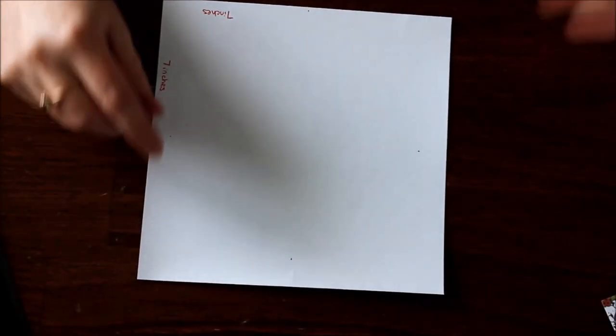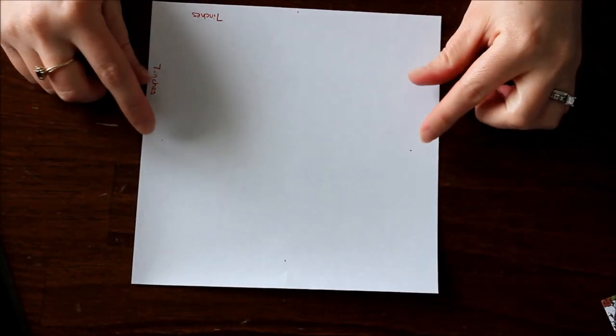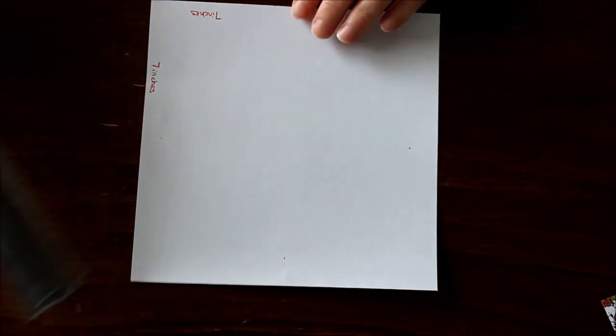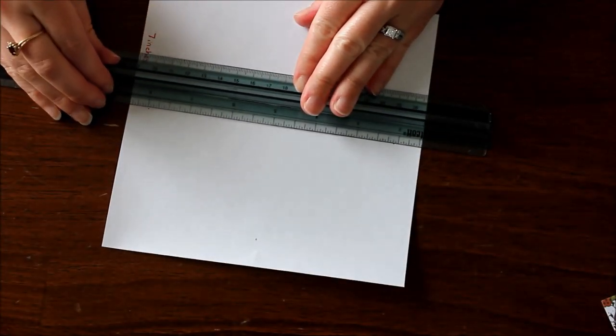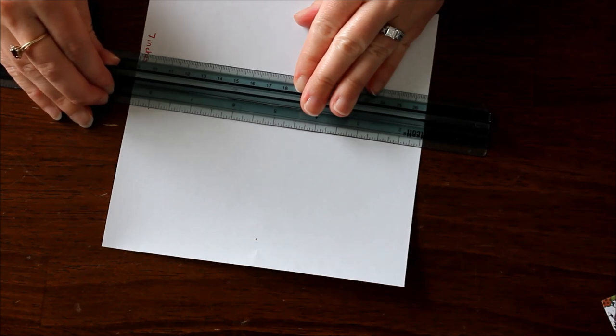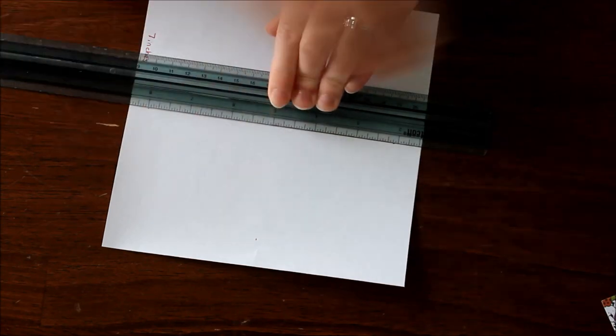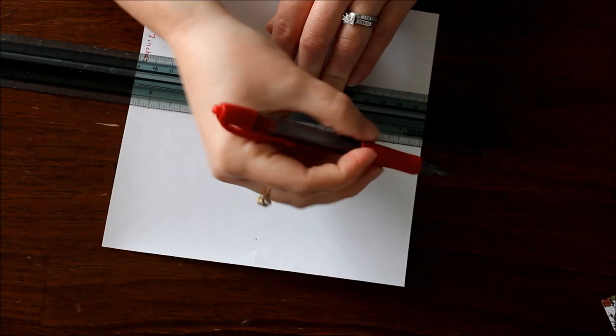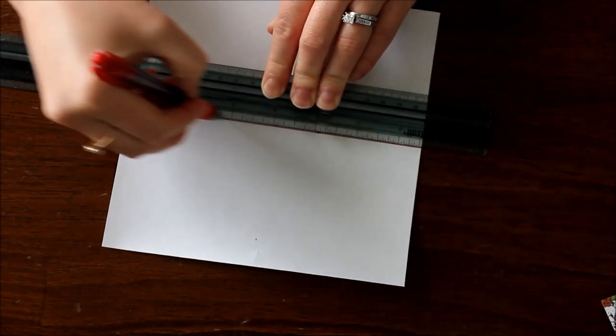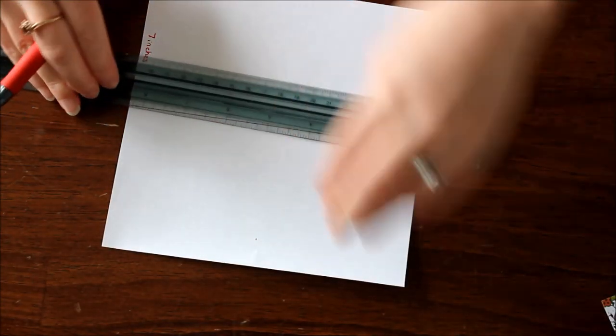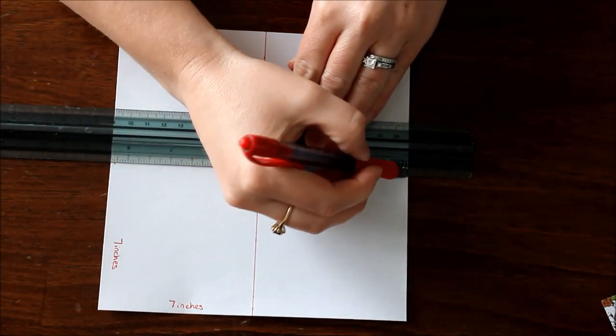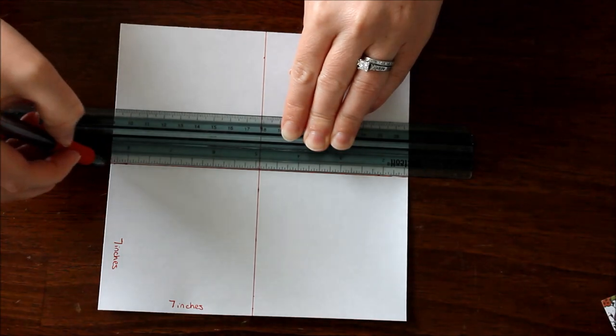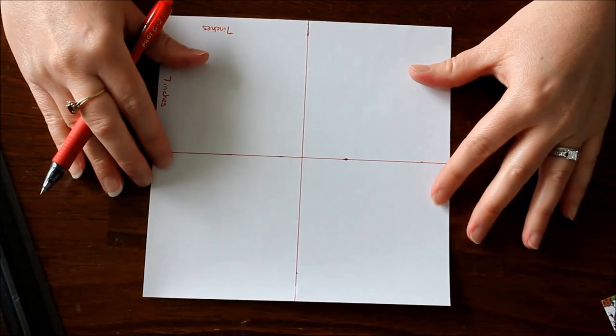So I have a seven by seven inch square and I went ahead and I made marks at the three and a half line so now three and a half of course is just halfway between the seven so now I'm going to go ahead and I'm going to make a line straight across for that three and a half going in that direction and then of course three and a half going in this direction. This is going to give me my center point of course.